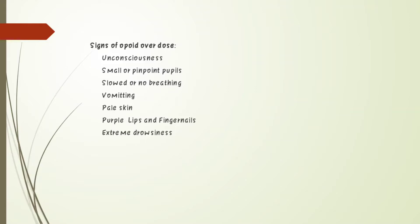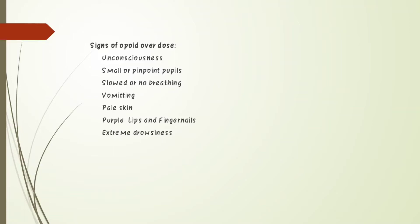Overdose signs of naloxone drugs include: unconsciousness, pinpoint pupils, slow breathing, vomiting, pale skin, purple lips, and extreme drowsiness. Case study: a 30-year-old female patient is found unresponsive, limp, and cyanotic. Her airways appear clear of obstruction, and she is breathing slowly at four breaths per minute.